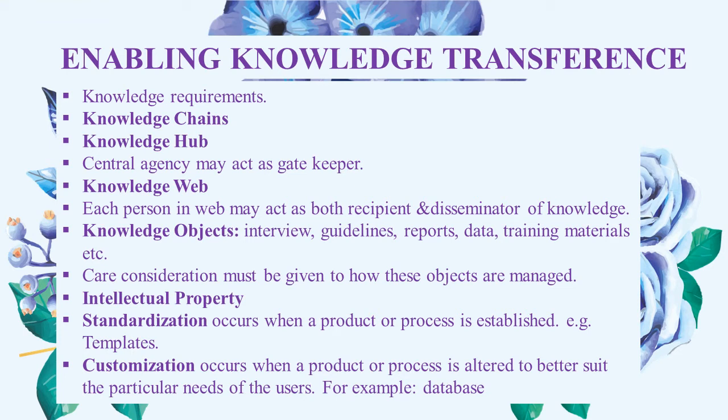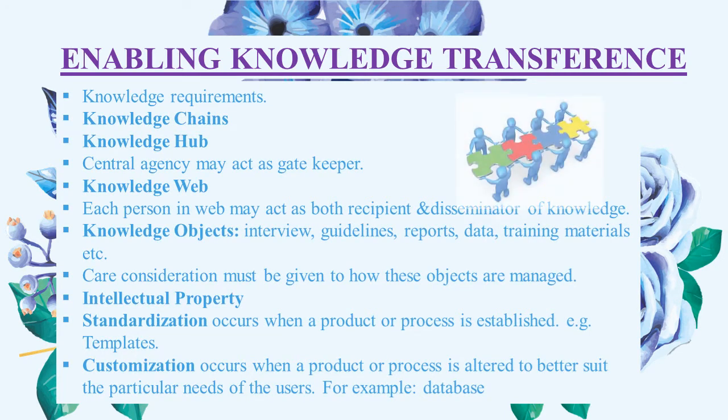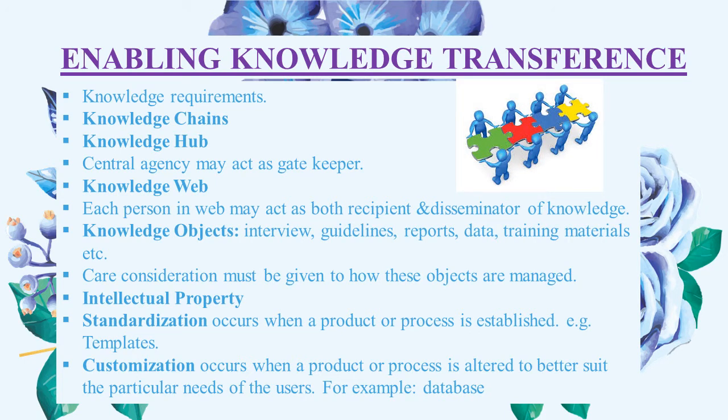Enabling knowledge transference is another very important factor after developing the knowledge management infrastructure. Every organization needs to be clear about its knowledge requirements, especially the intellectual capital areas essential to the core business. Recognition of mission-critical information assets enables assessment of the risks attached to losing them. Many traditional organizations still rely on knowledge chains reflecting their concerns for controlling and organizing knowledge, relying on one-to-one exchange often between supervisor and subordinate, which can ensure standardized practices but reduces the potential for creative and flexible work responses.